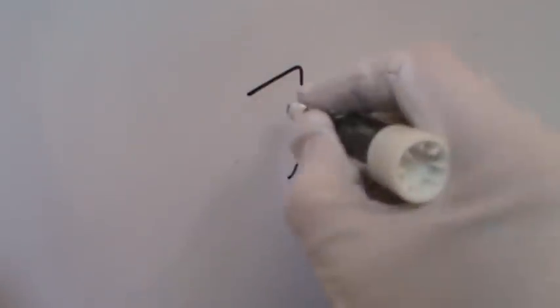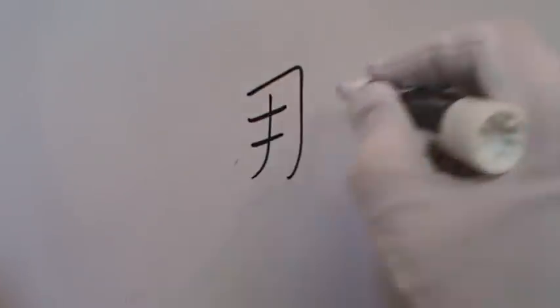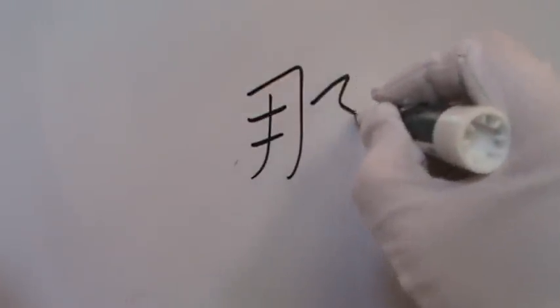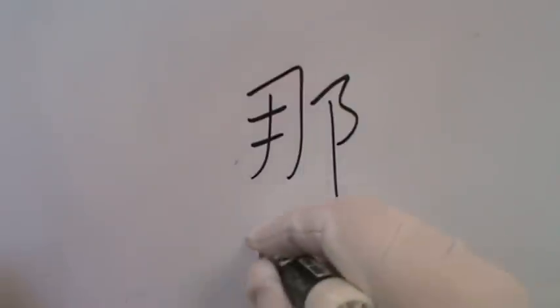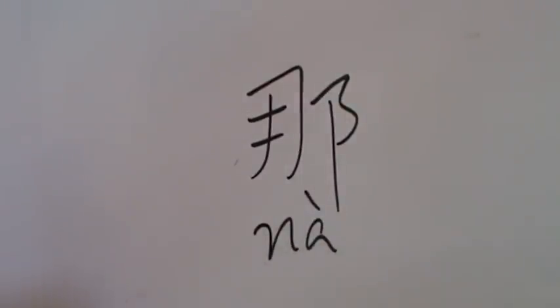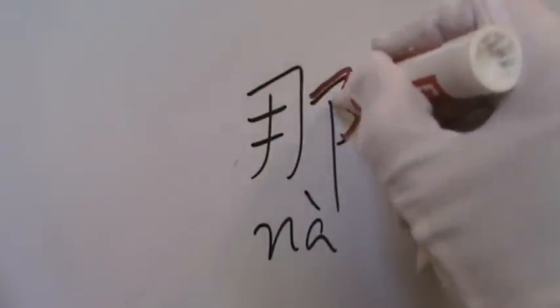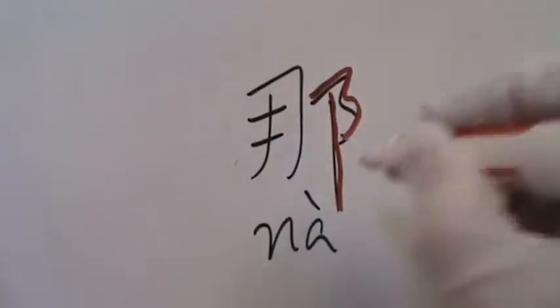Now let's go to number two: 那 (Na), written with 6 strokes. Na means 'that'. And the radical is on the left, this one here.